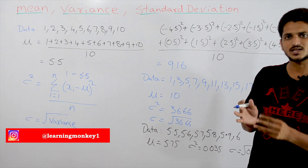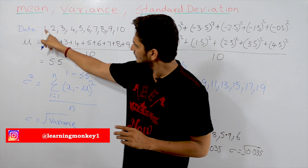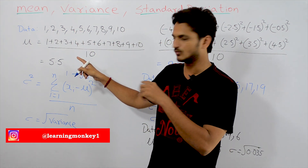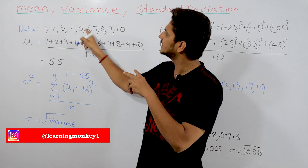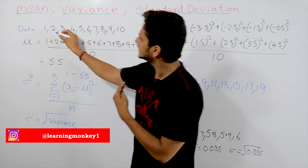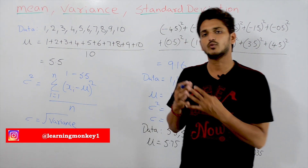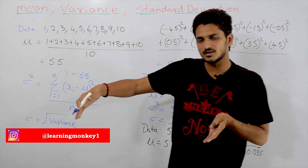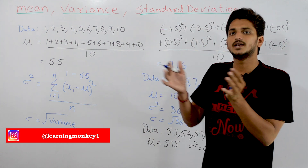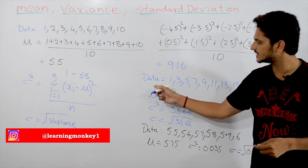Observe what we are calculating in variance: (1 − 5.5) gives us the distance from data point 1 to the mean. We are calculating the distance of each data point from the mean. As the distance increases, the variance value increases; as the distance decreases, the variance value decreases. The variance for this first dataset is 9.16 (approximately).